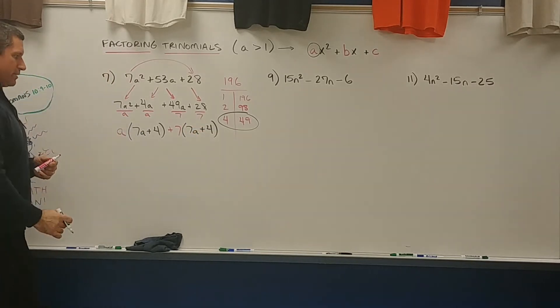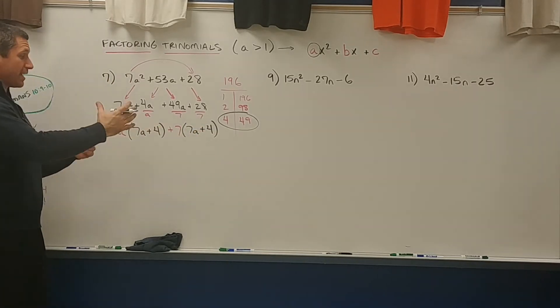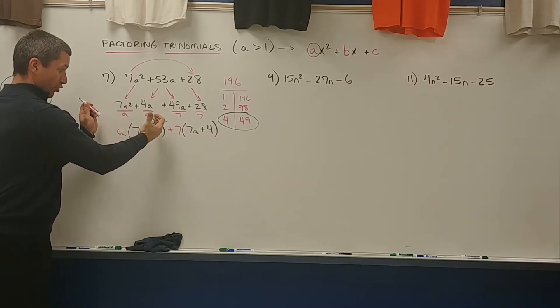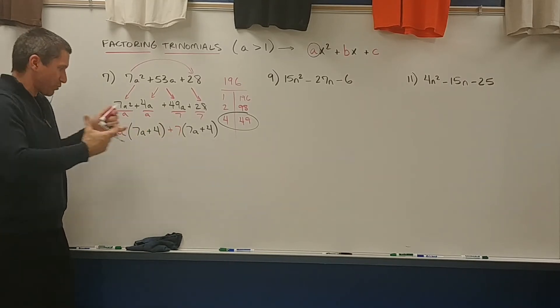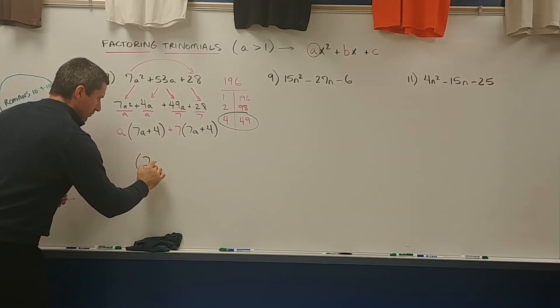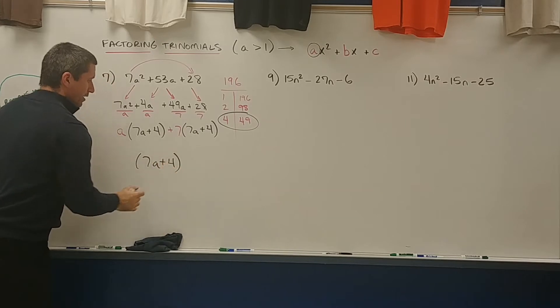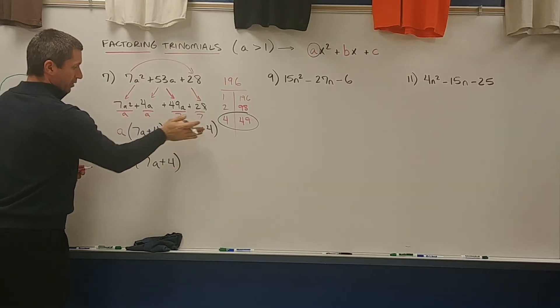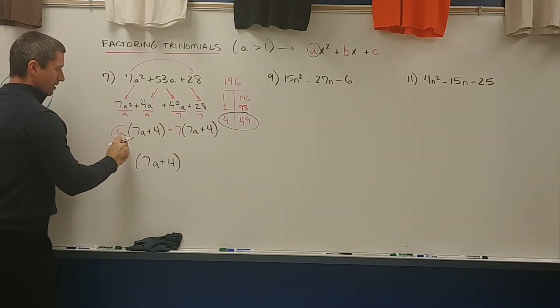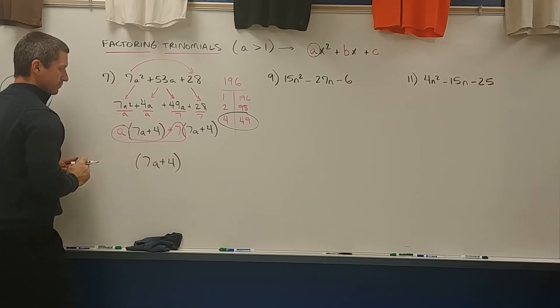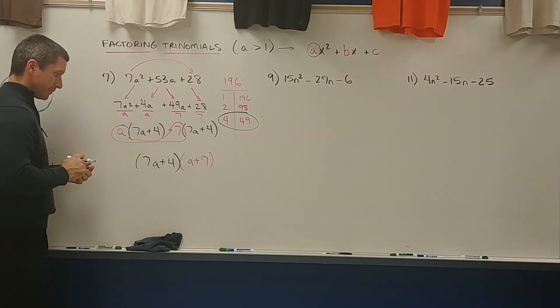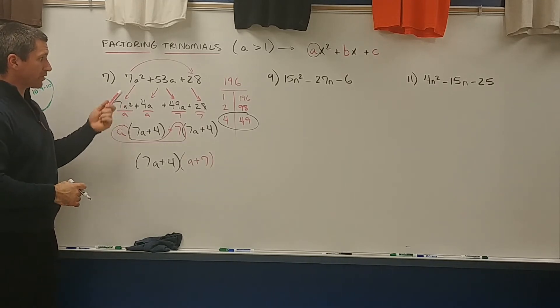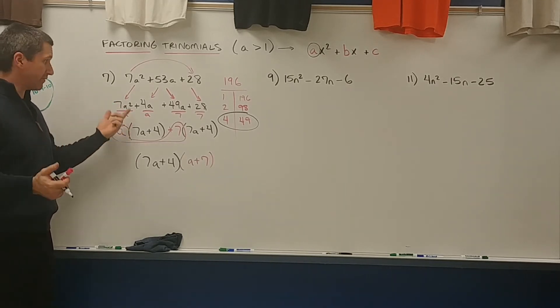Genius! See how the groups are the same? So that is what you take out of both of these terms. Well, there's more than one term there, but both of these entities, things, just come on. 7a plus 4. And if you take that away from each part, what's left? I see a plus 7. Okay. Nifty. Remember, that works for all trinomials that are factorable if they're of this form.